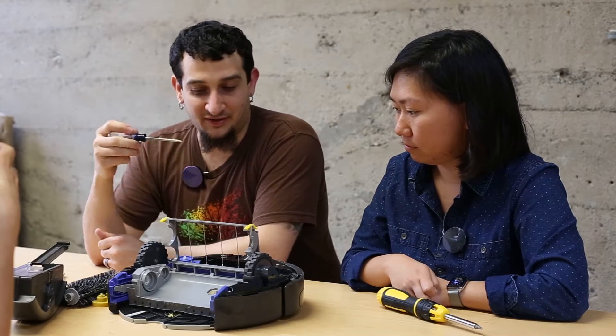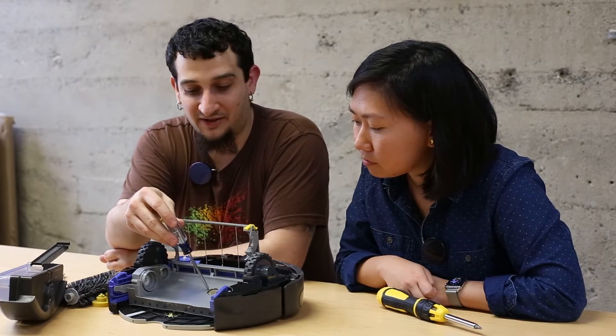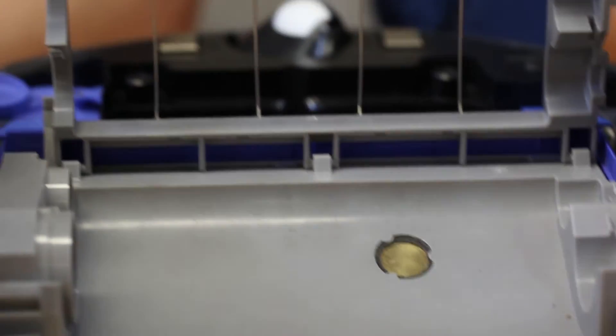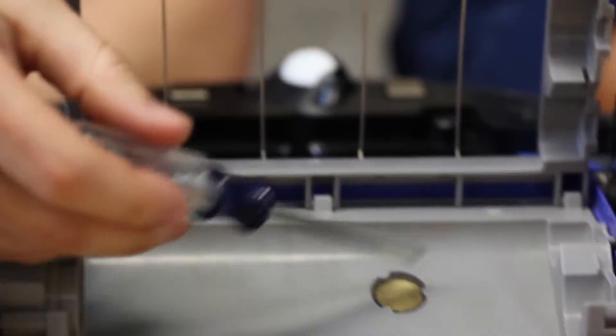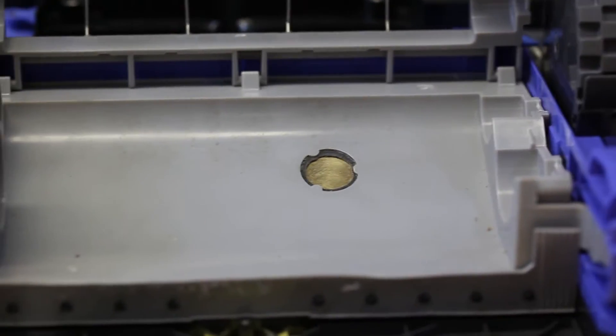How it detects dirt is, you know, when you're vacuuming and you hear things bouncing up into the chamber. This is actually a piezoelectric sensor, right here, kind of like a microphone. So it hears things hitting this plate right here and then it'll know, oh, I'm getting dirt. And then it goes over that a few more times.